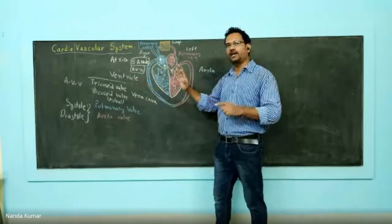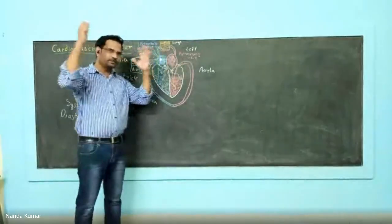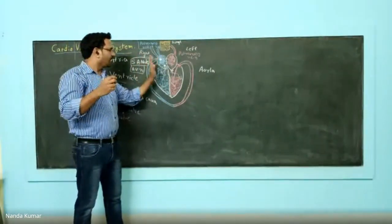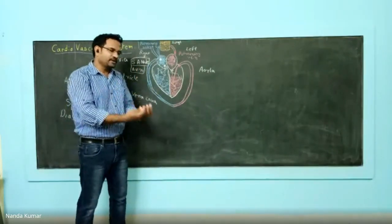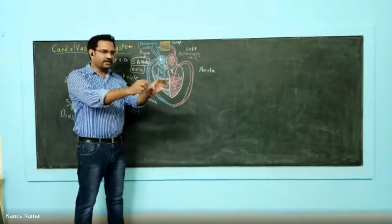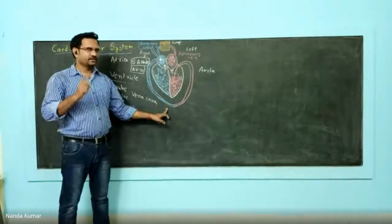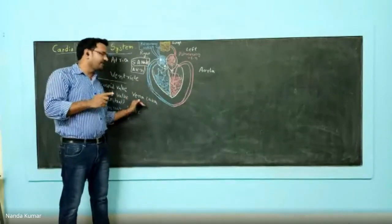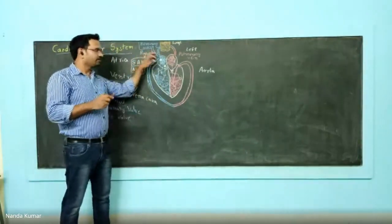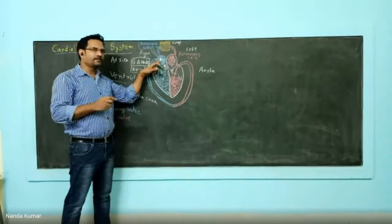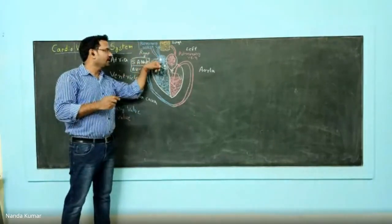These are the anatomical parts of the heart. On the right side, deoxygenated blood is present. When oxygenated blood goes to every part of the body, all the tissues take up the oxygen and it becomes deoxygenated blood. Deoxygenated blood is carried by veins. The major vein is the vena cava — inferior vena cava from the lower parts, and superior vena cava from the top — both putting deoxygenated blood into the right atrium.